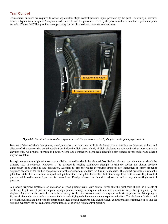Trim control. Trim control surfaces are required to offset any constant flight control pressure inputs provided by the pilot. For example, elevator trim is a typical trim in light GA airplanes and is used to null the pressure exerted by the pilot in order to maintain a particular pitch attitude. This provides an opportunity for the pilot to divert attention to other tasks. Because of their relatively low power, speed, and cost constraints, not all light airplanes have a complete set — elevator, rudder, and aileron — of trim controls that are adjustable from inside the flight deck. Nearly all light airplanes are equipped with at least adjustable elevator trim.